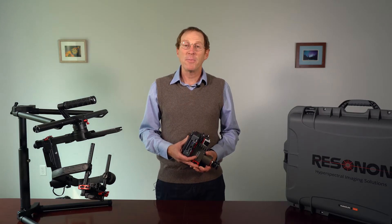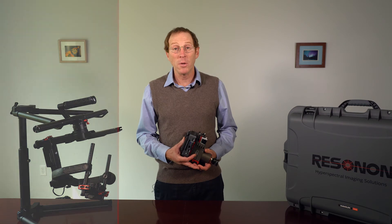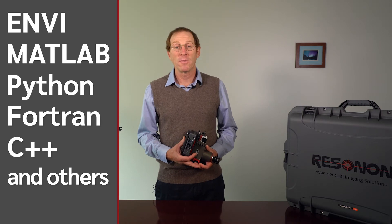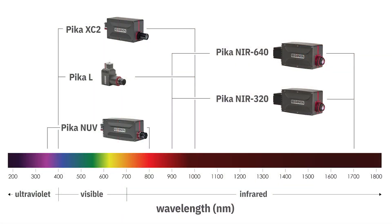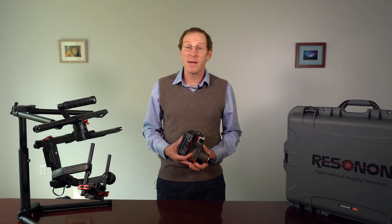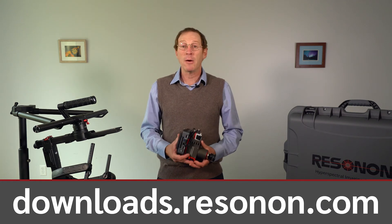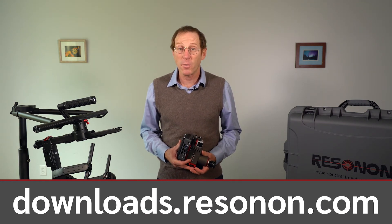The data is in common binary formats so you can access it with our software or any other common software tool such as ENVI, Matlab, Python, Fortran, and others. We offer a selection of hyperspectral cameras for use in our airborne systems. Our cameras cover a variety of visible and infrared spectral ranges. Our hyperspectral software Spectranon contains many tools for data analysis and visualization and you can download sample data from the airborne system along with our Spectranon software for free from the downloads page on our website.